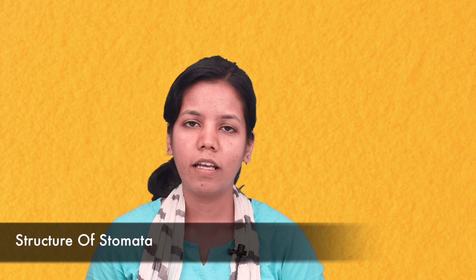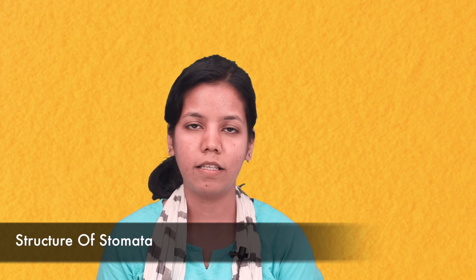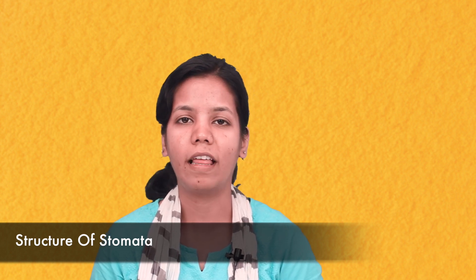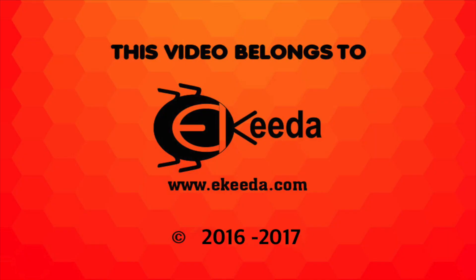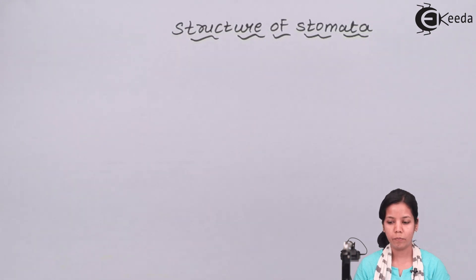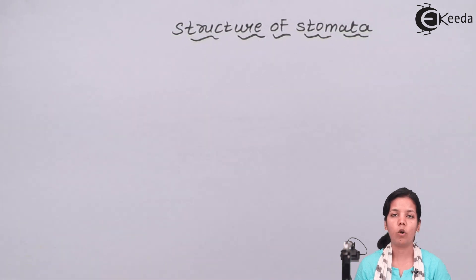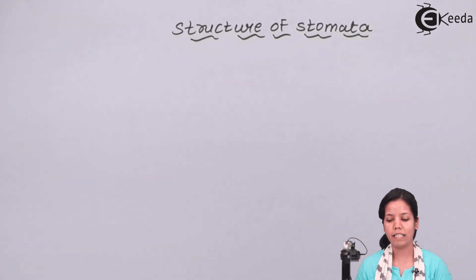Stomata are where carbon dioxide and oxygen enter, and from where water molecules are lost through transpiration. Stomata are tiny pores present on the epidermis or upper layer of a leaf, mainly responsible for gaseous exchange. During photosynthesis, stomata open so that carbon dioxide can gain entry inside the leaf. Even during transpiration, the guard cells or stomata have to be opened for the process to take place.